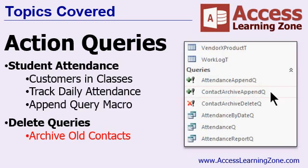Next, we'll learn about delete queries — how to delete records from your tables automatically. The example we'll use is archiving old contact information from our customer database. If you talk to customers every day, after several years you might have extra information in there that you don't want to delete, but you want to move it so it's not in your main customer database. We'll use an append query to copy old records to a new table, then a delete query to remove them from the original contact table.